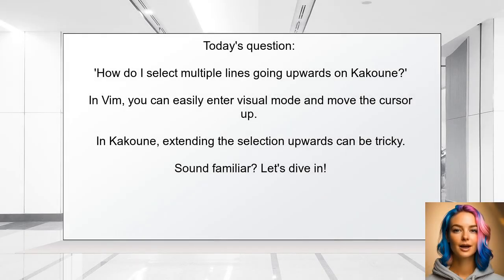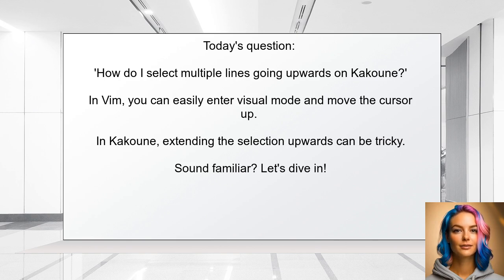Here's the specific question we're addressing today. One user asked: how do I select multiple lines going upwards in Cocoon? They mentioned that in Vim, they could easily enter visual mode and move the cursor up, but in Cocoon, they find it difficult to extend the selection upwards without losing the selection on the first line. Sound familiar? Let's dive into this.